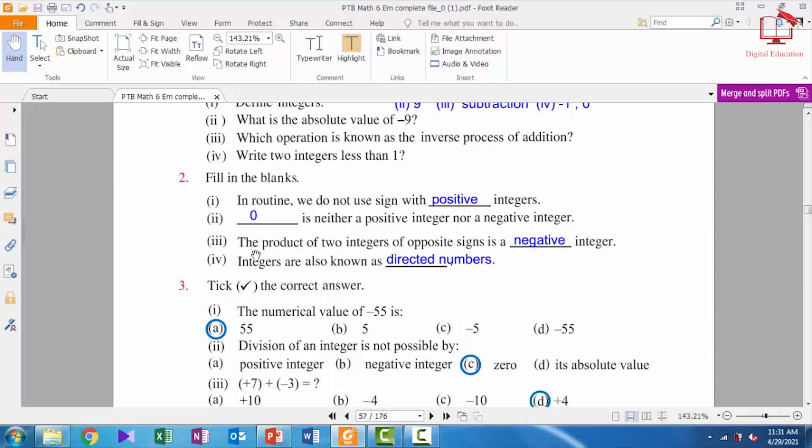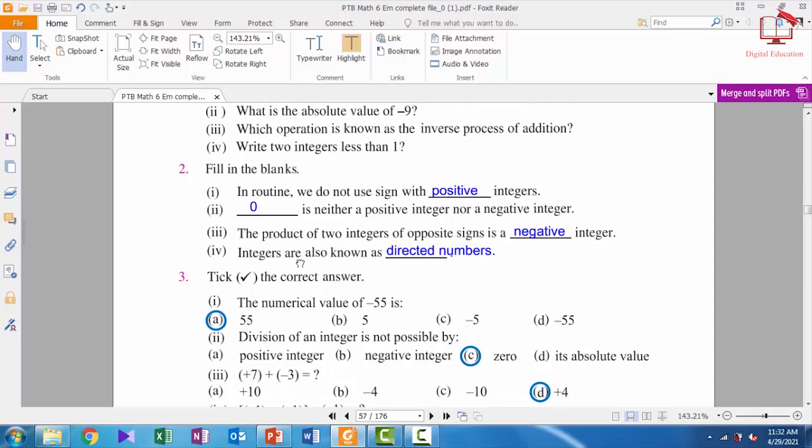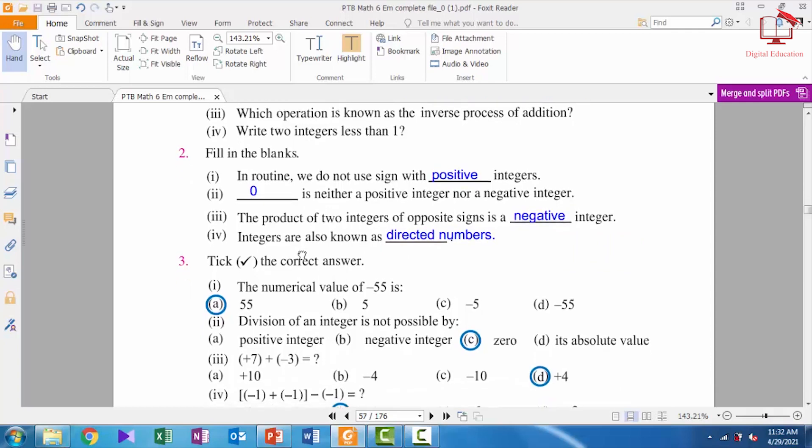Number 3: the product of two integers of opposite sign is a negative integer. Number 4: integers are also known as directed numbers.